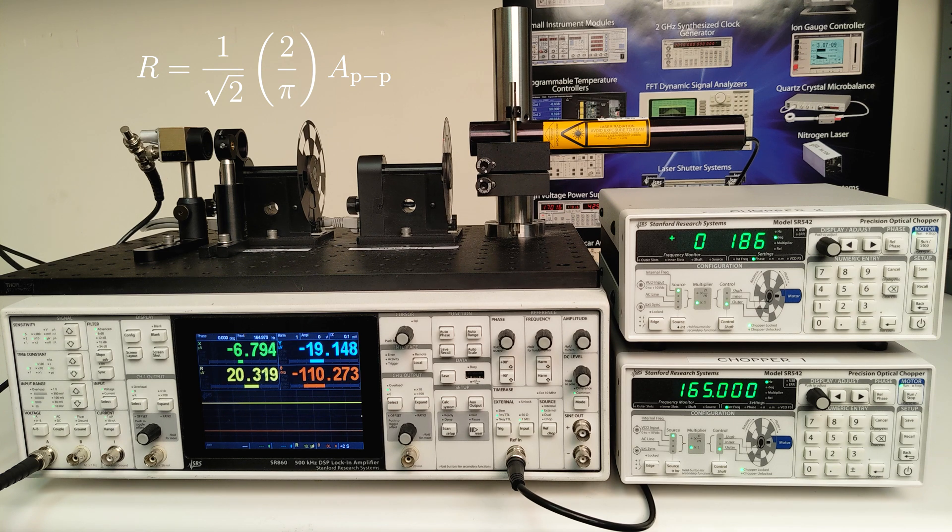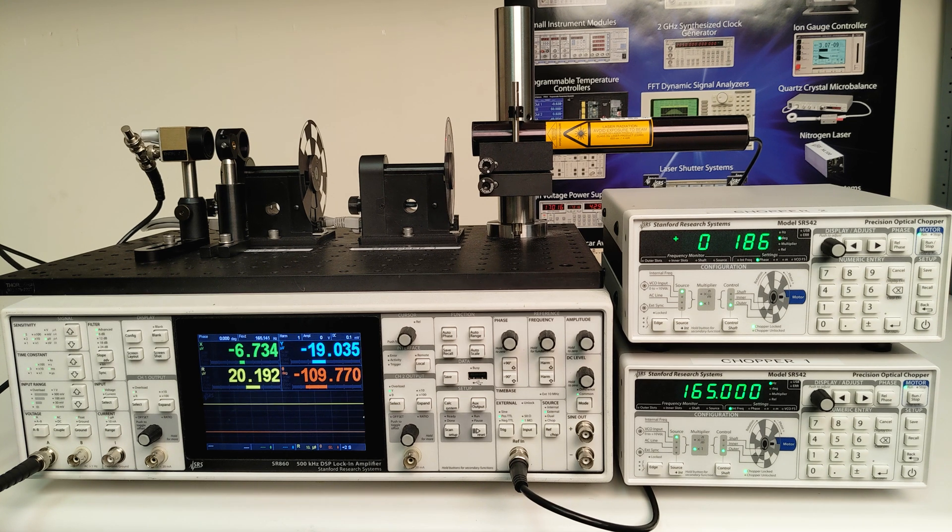This works out to be about 0.45 times the peak-to-peak square wave amplitude. That would be 26 microvolts, which is pretty close to what we see, and likely within the tolerance of the ND filter.